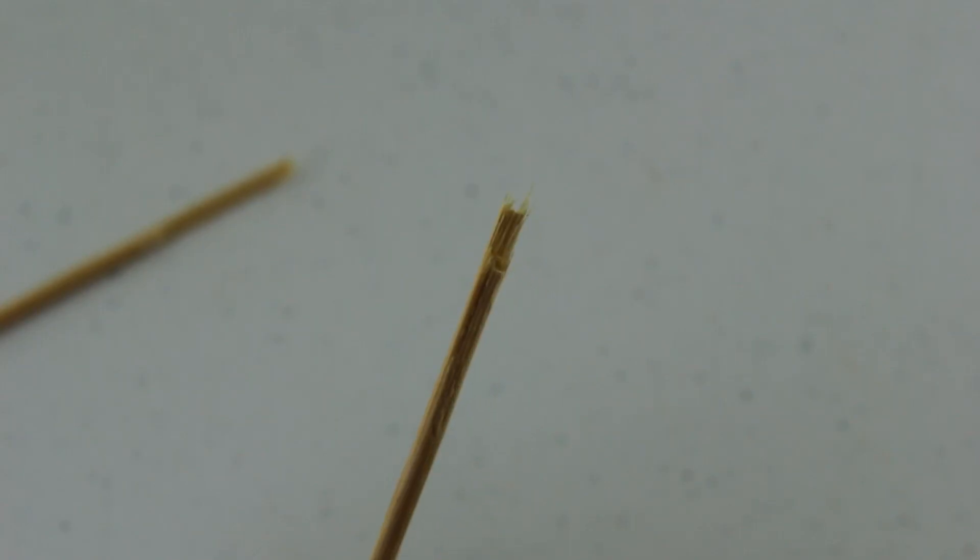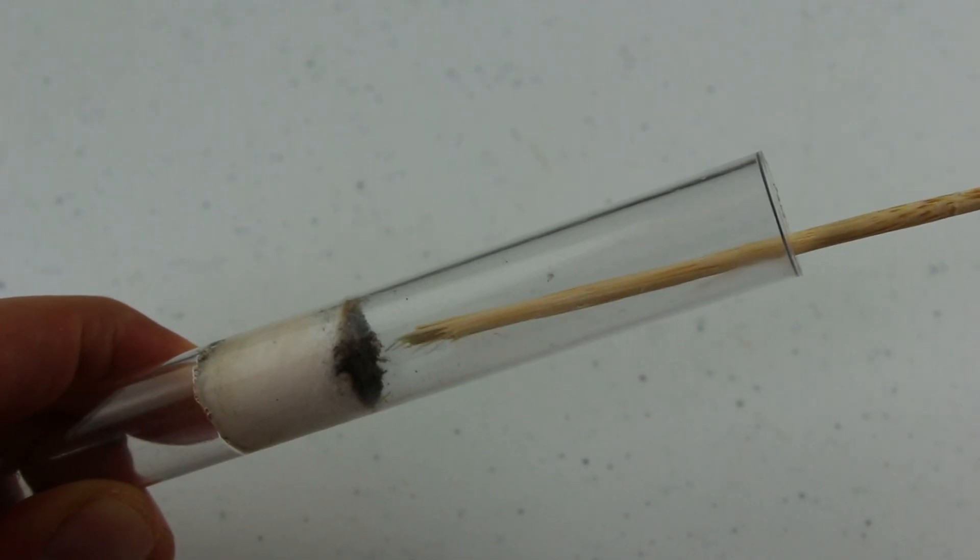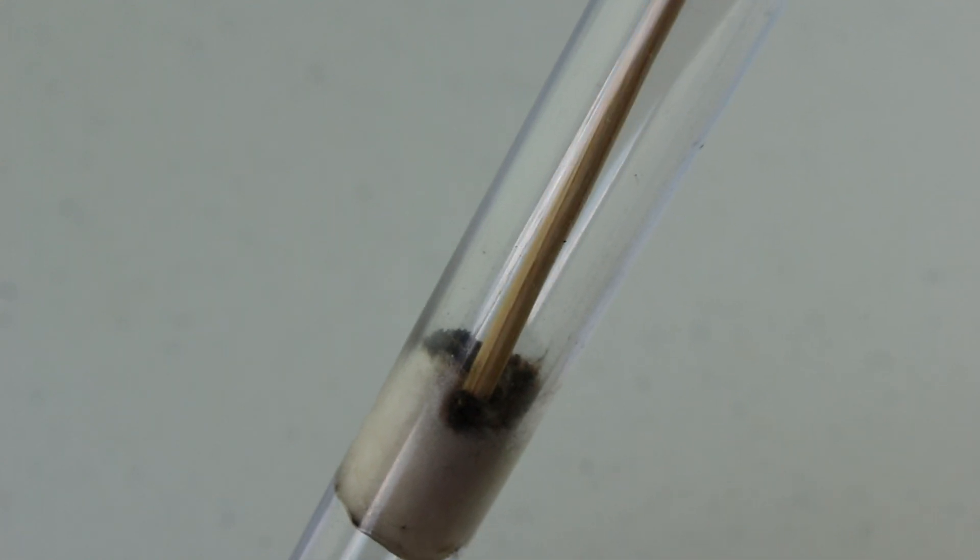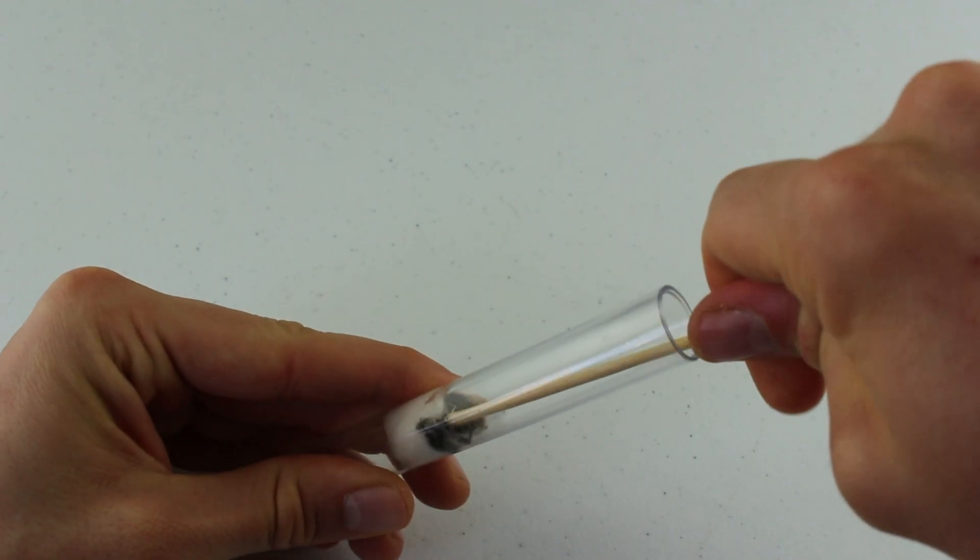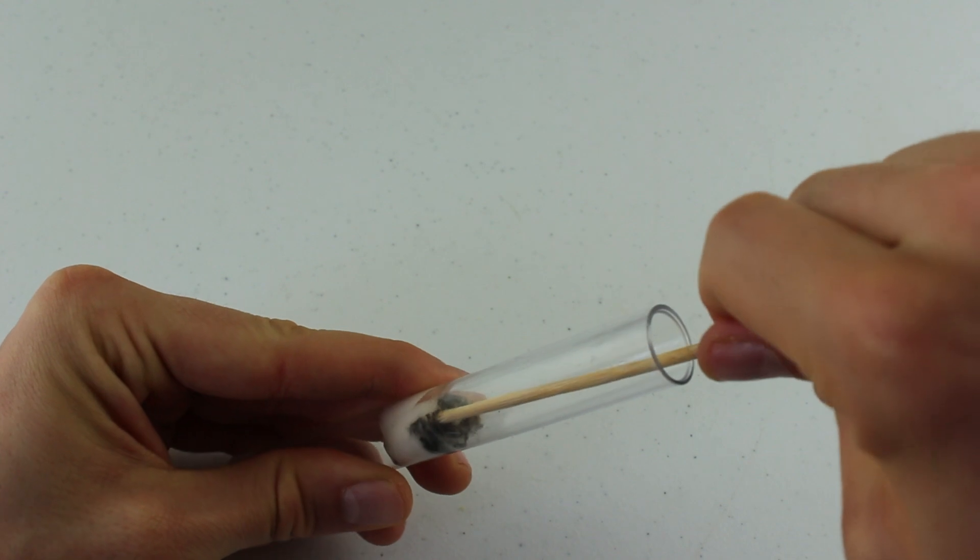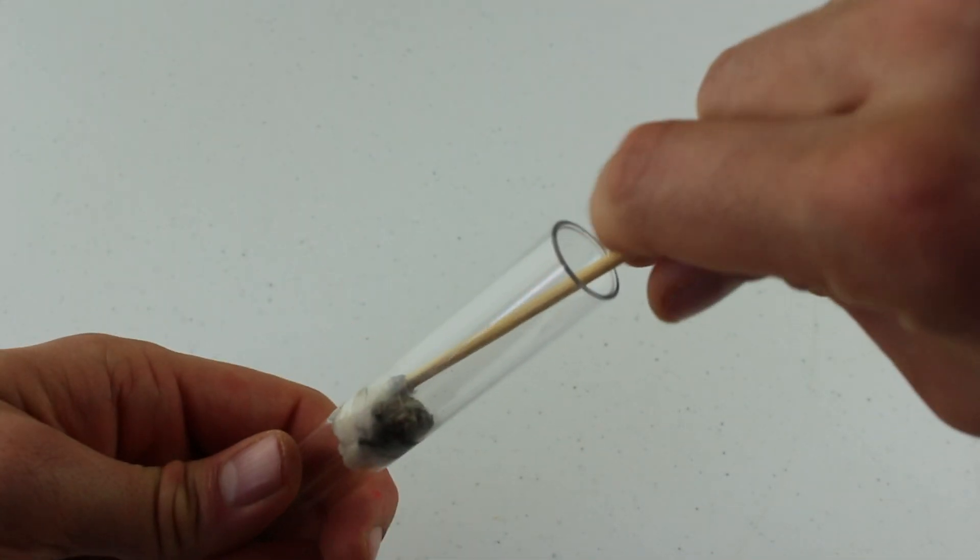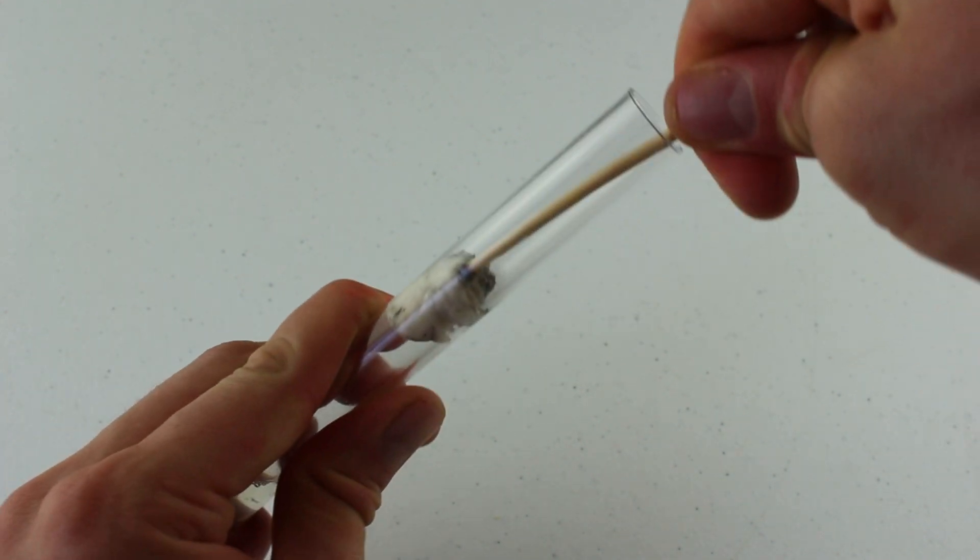Once you have your flaky skewer, you want to put this into your test tube. Then you'll want to slowly turn and push the skewer until it catches onto the cotton. You will know when it is gripped tightly when it becomes harder to turn, or the cotton turns with the skewer. With the turning motion, you then want to slowly start pulling out the cotton.